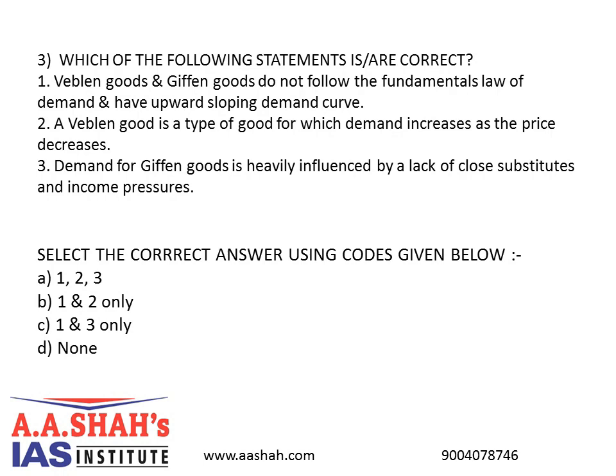Select the correct answer using the codes given below. A: 1, 2, 3. B: 1 & 2 only. C: 1 & 3 only. D: none. Answer: C. A Veblen good is a type of luxury good for which demand increases as the price increases.